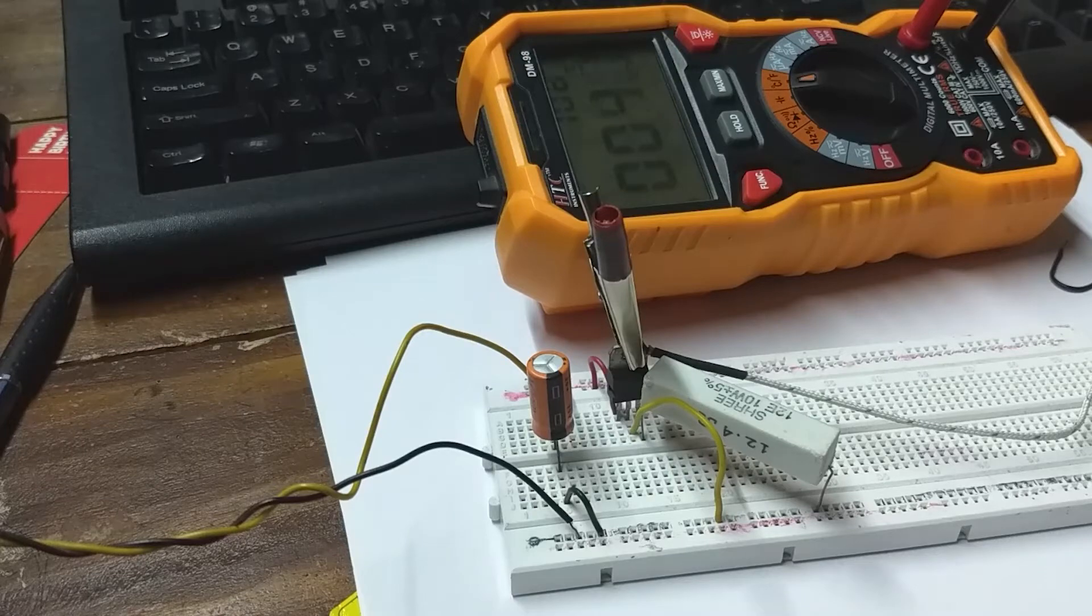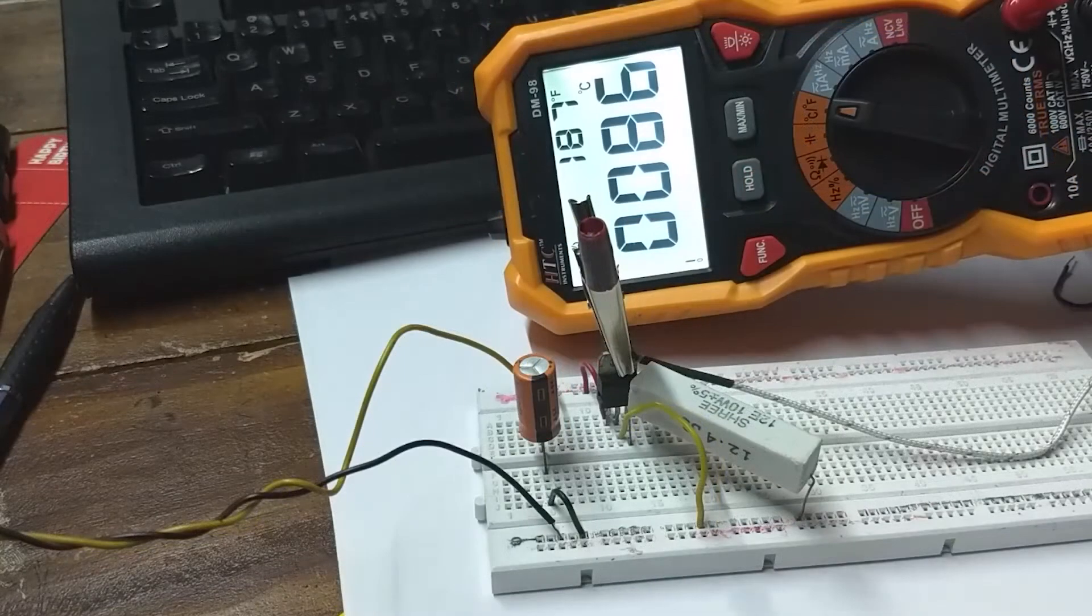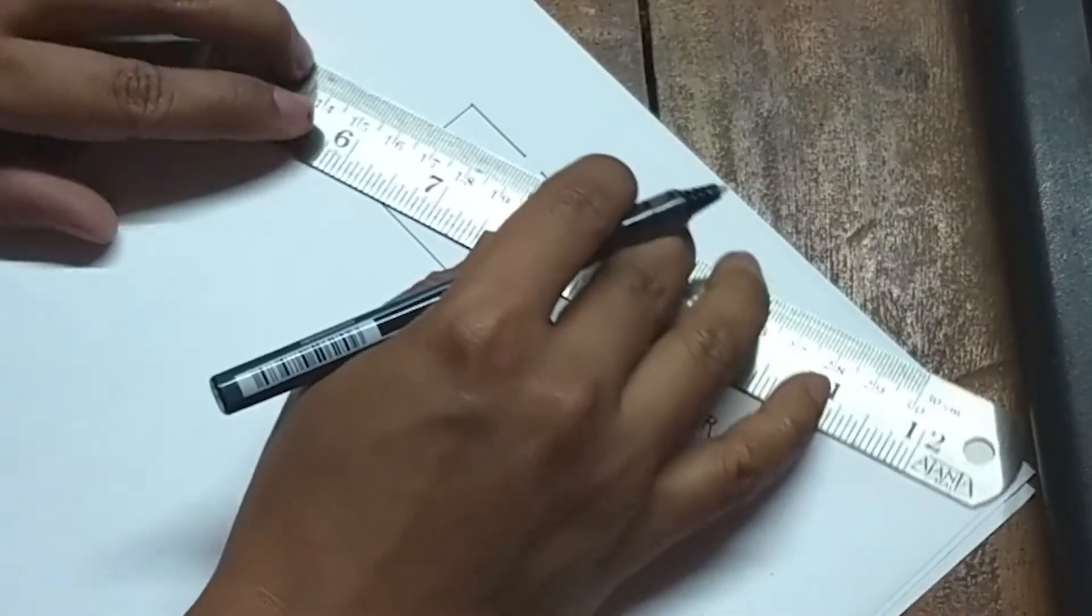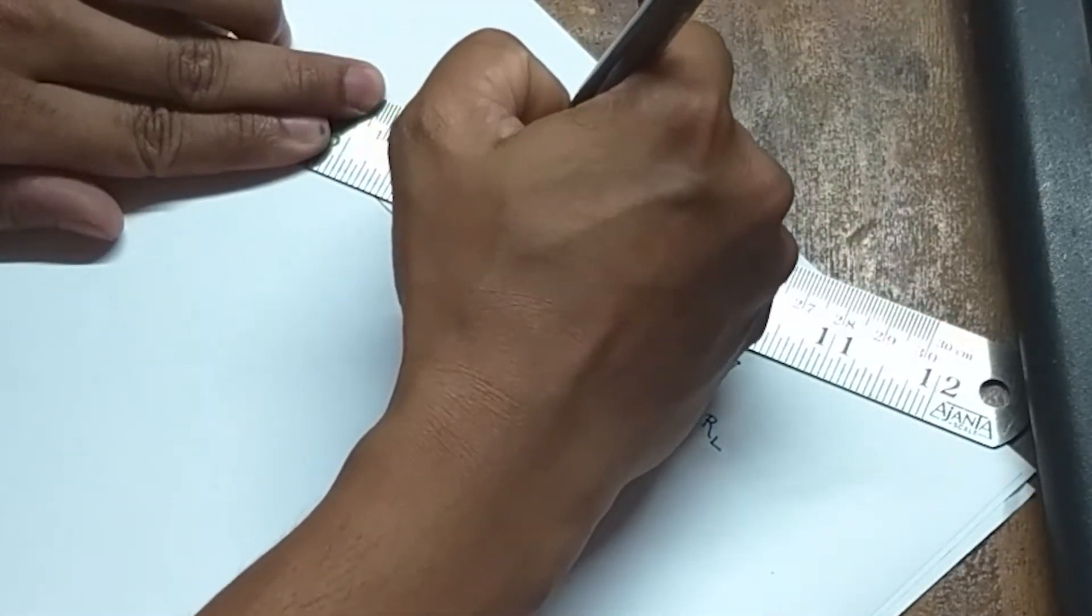The alternative is a buck regulator, which is a switch mode regulator. Meaning as the name says, there will be a switch in between the input voltage and the load.